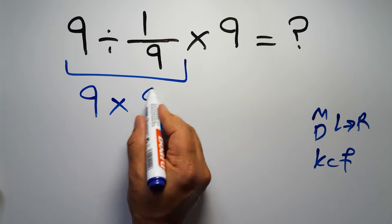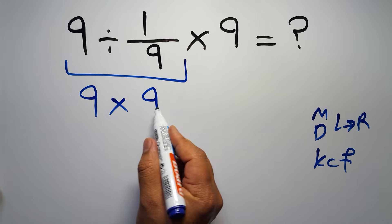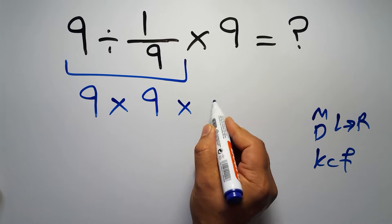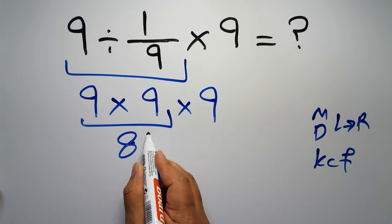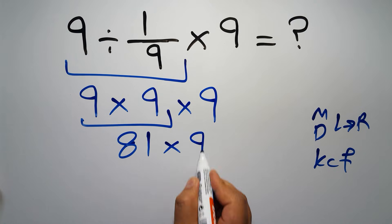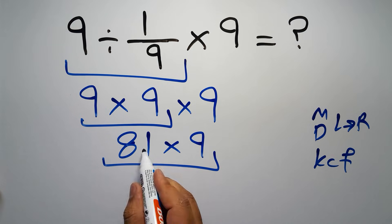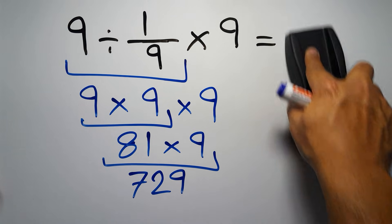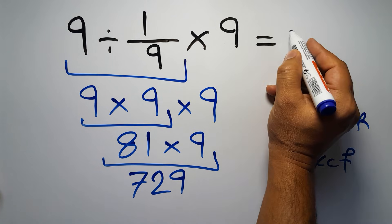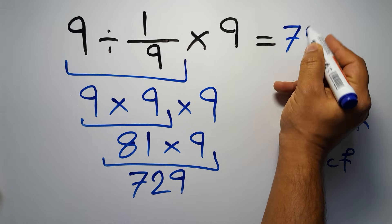So 9 times 9 and again times 9. 9 times 9 gives us 81, so 81 times 9. 9 times 1 gives us 9, and 9 times 8 equals 72. So we have 729, and this is our final answer to this problem. The correct answer is 729.